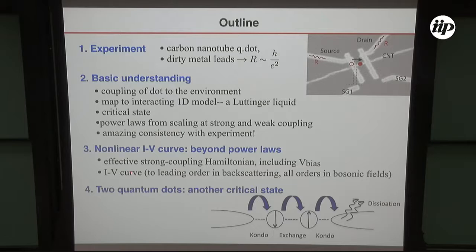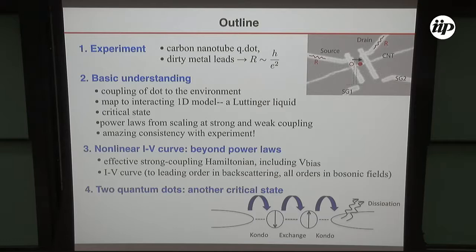The basic understanding of what's happening involves first explaining how the quantum dot couples to the environment. Once I've done that, you'll see that I can map that model into a one-dimensional interacting model known as a Luttinger liquid, about which an enormous amount is known. I'll draw on those results to find what the temperature dependence should be and compare to experiments. After that, we'll turn to the nonlinear I-V curve, where the key is an effective Hamiltonian at the strong coupling fixed point. Then there's a fourth part, also using quantum dots, showing a second example of how an environment can create interesting states.